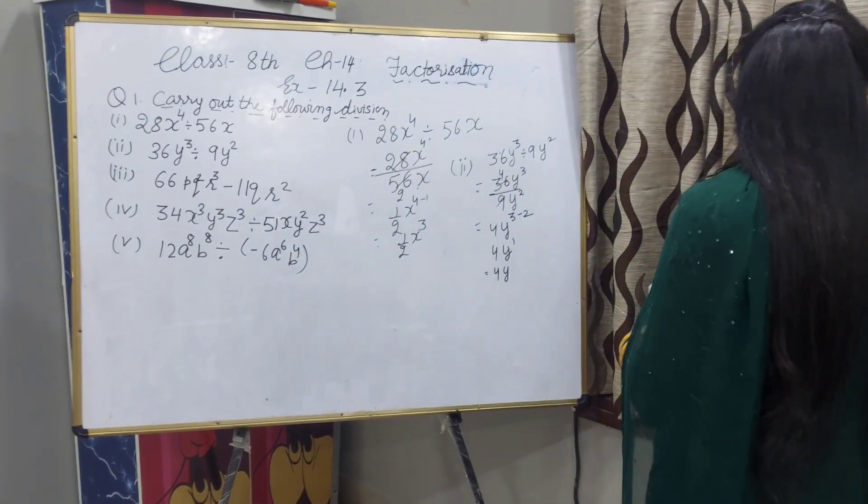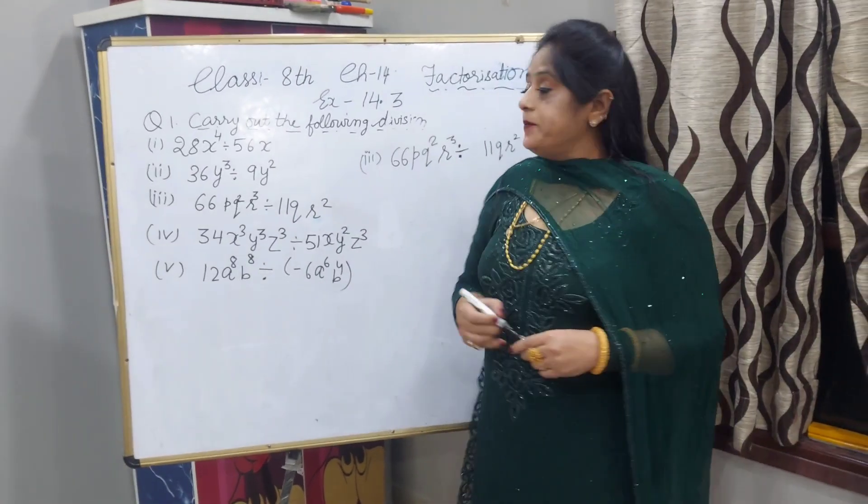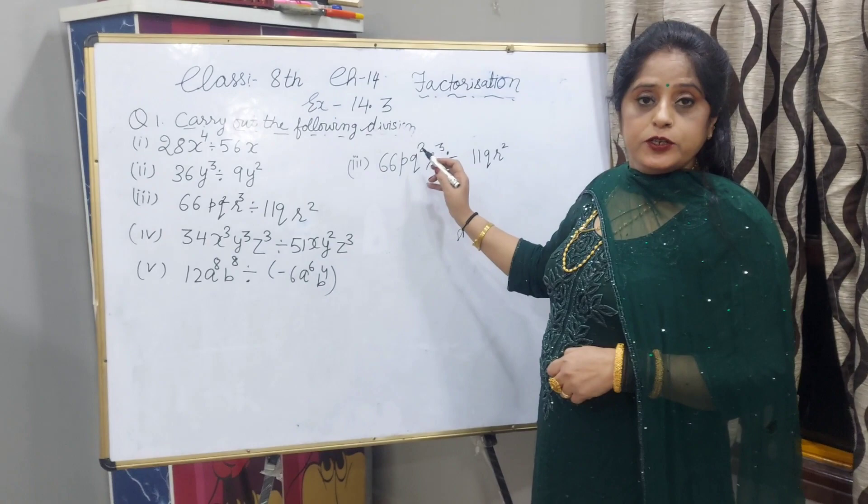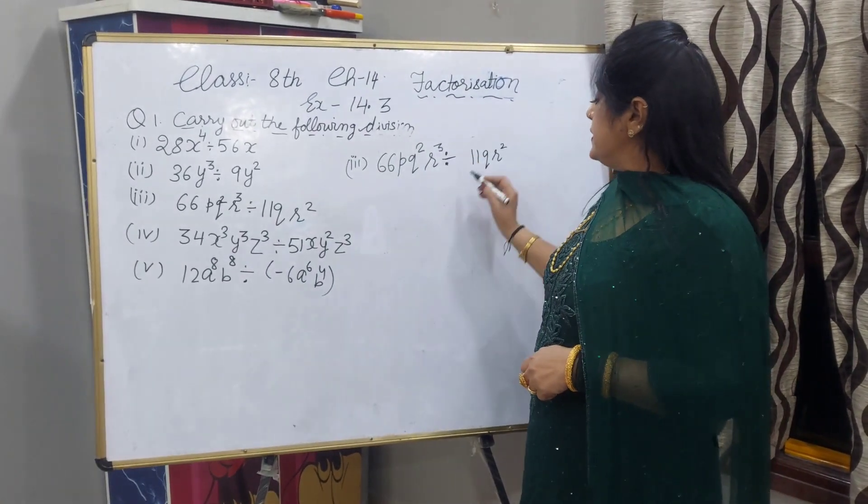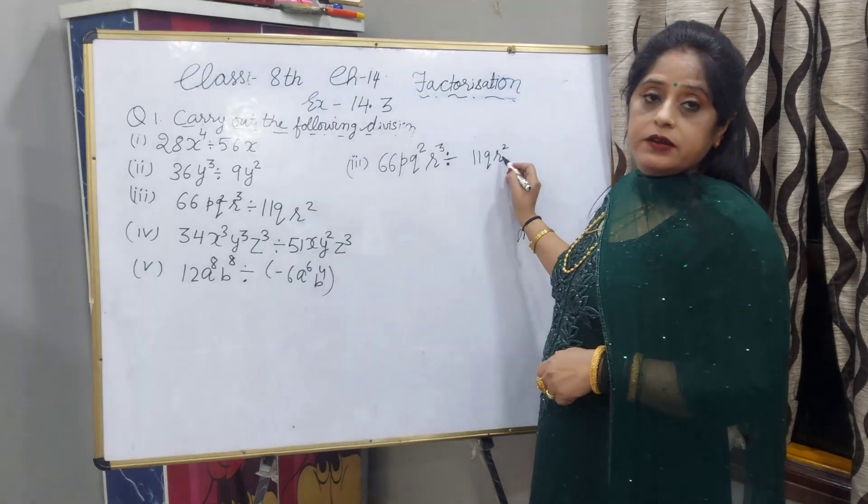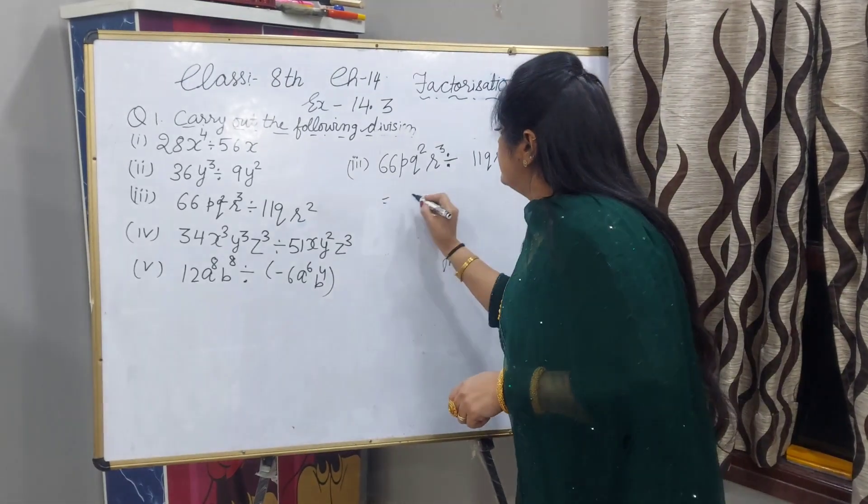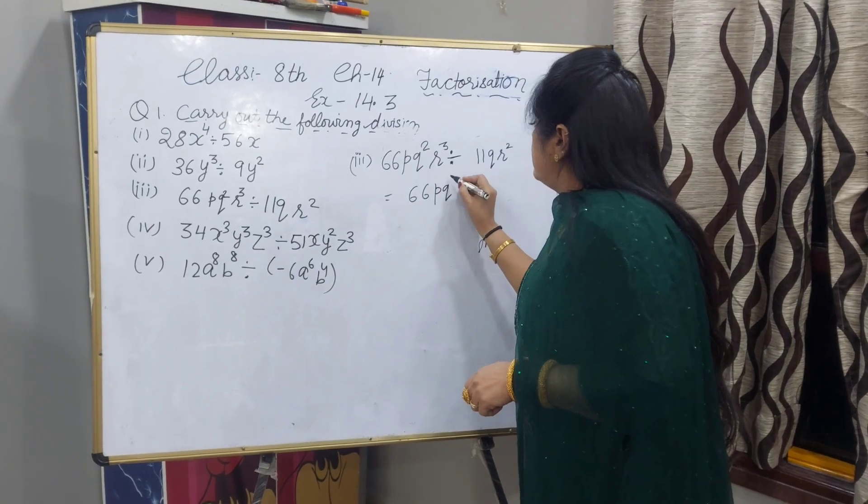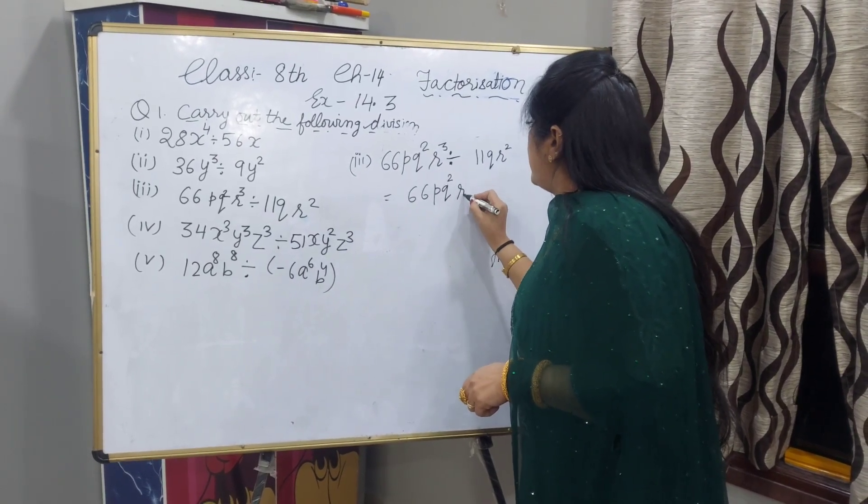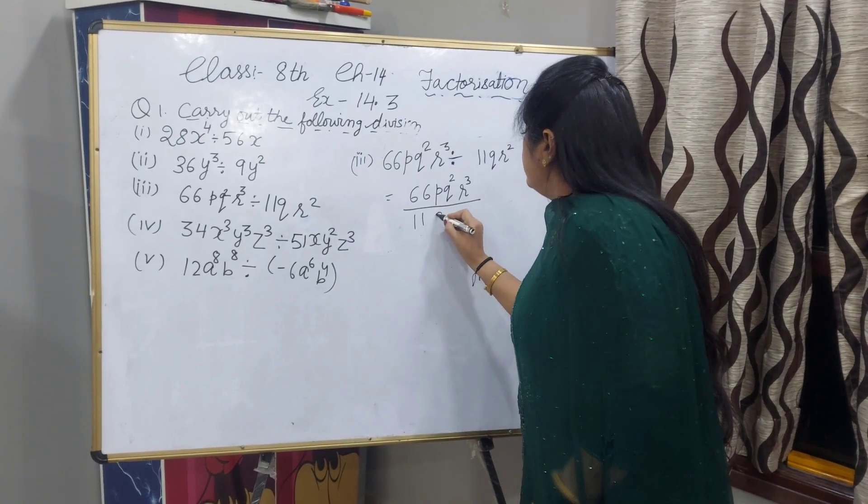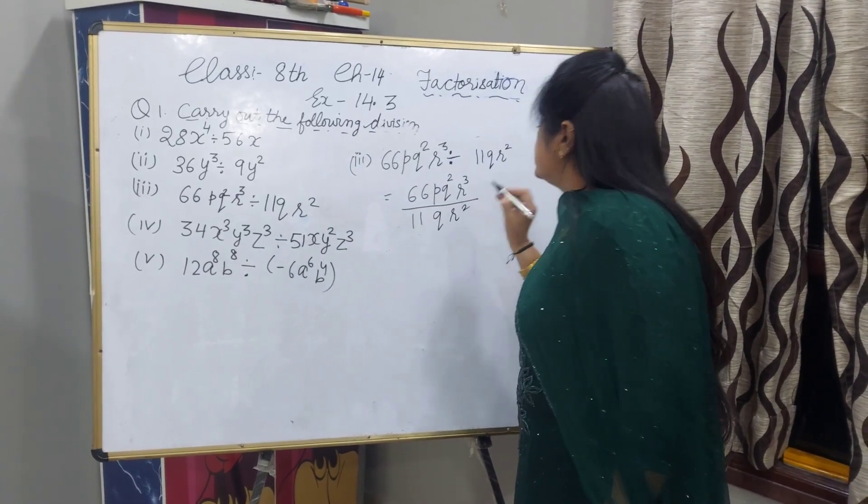Now I will explain third part. 66pq raised to power 2, r power 3. We have to divide by 11qr raised to power 2. We can write 66pq^2r^3 by 11qr^2.